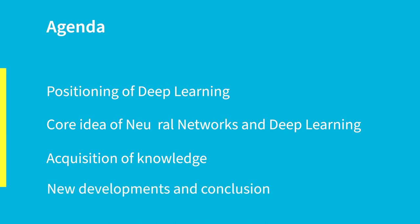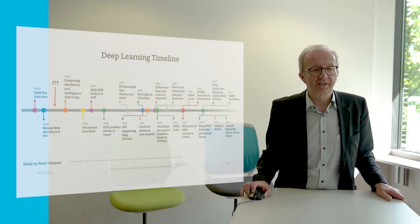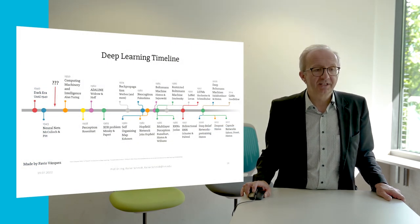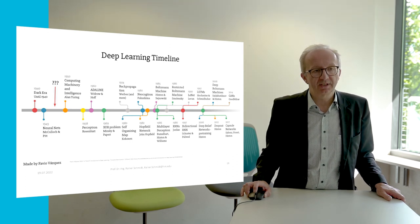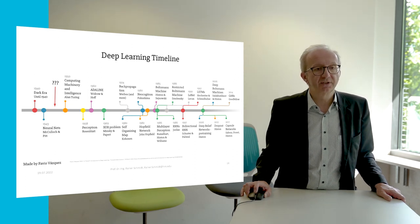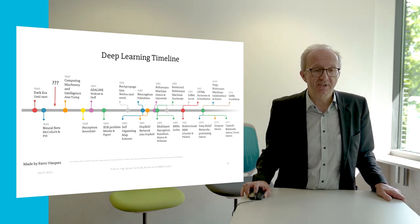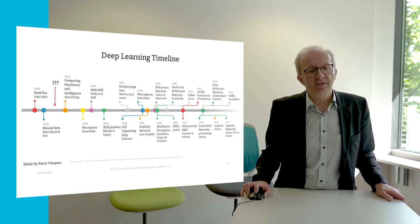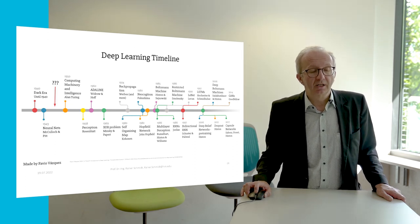To conclude our lesson today I will give a short outlook on new developments in neural networks and give a conclusion. The history of neural networks is a very long one. Even in the 1940s there were first ideas. And as with classical artificial intelligence, neural networks had their ups and downs. There were phases when people were very enthusiastic about neural networks and there were also kinds of neural network winters when interest was very low.